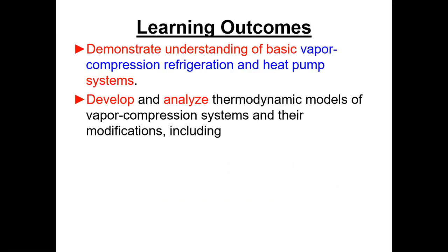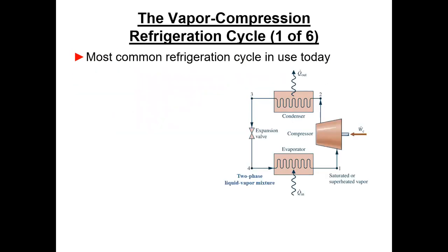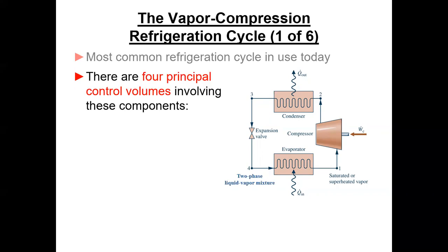We'll skip the learning outcomes — you can look those over on your own. We're going to start with the vapor compression refrigeration cycle. This is the standard refrigeration cycle used for refrigeration or air conditioning in the country and around the world. There are four principal control volumes: a compressor, condenser, expansion valve, and evaporator.